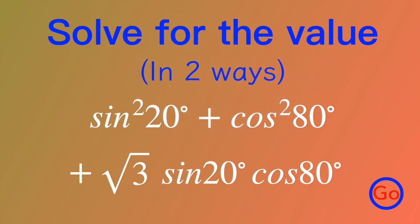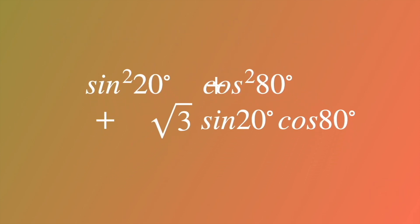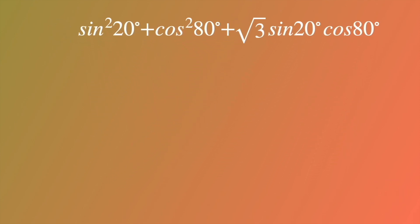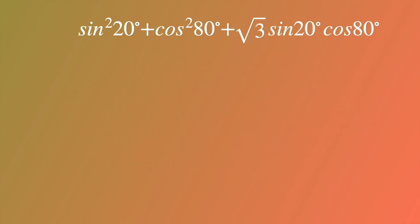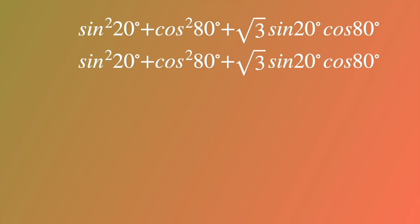There are two ways to solve the problem. Here is the first way. The first method is to use the dual form of the trig expression. So what is the dual form in trigonometry? Keep watching and let's see how the magic works. Substitute sine for cosine and cosine for sine in the expression, so we can get the dual form of the original expression.